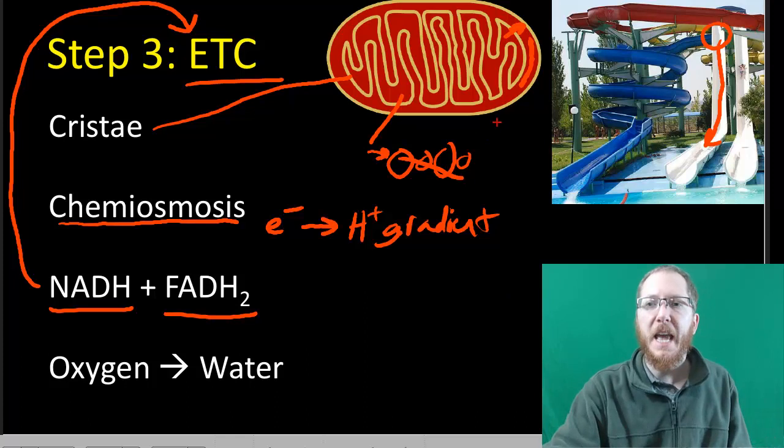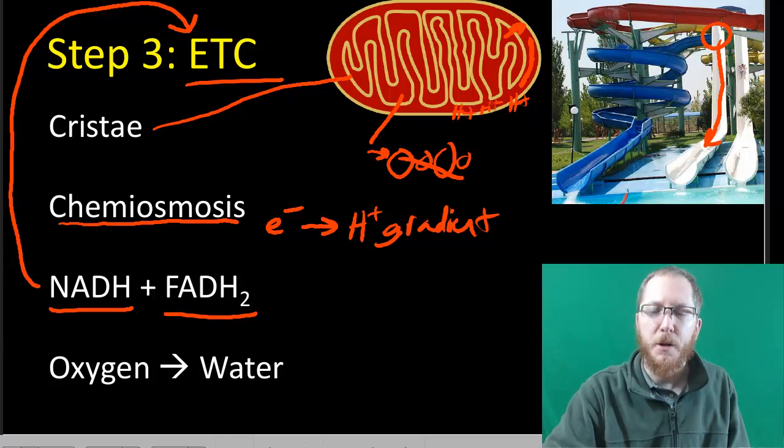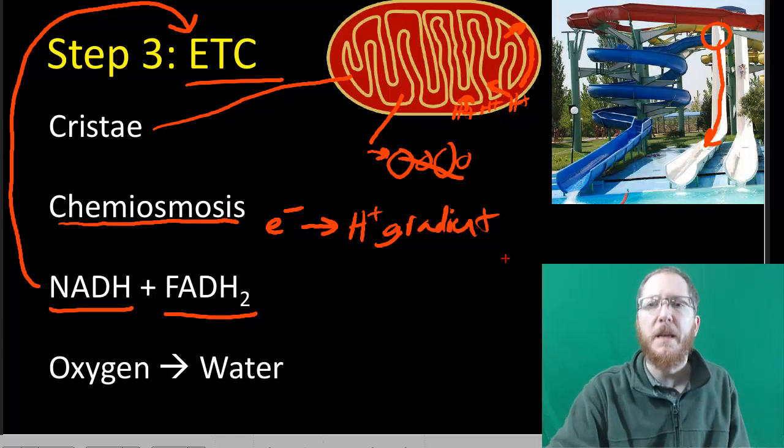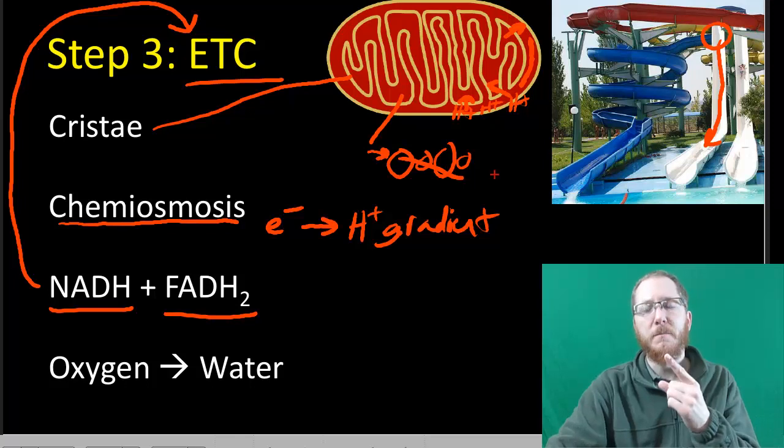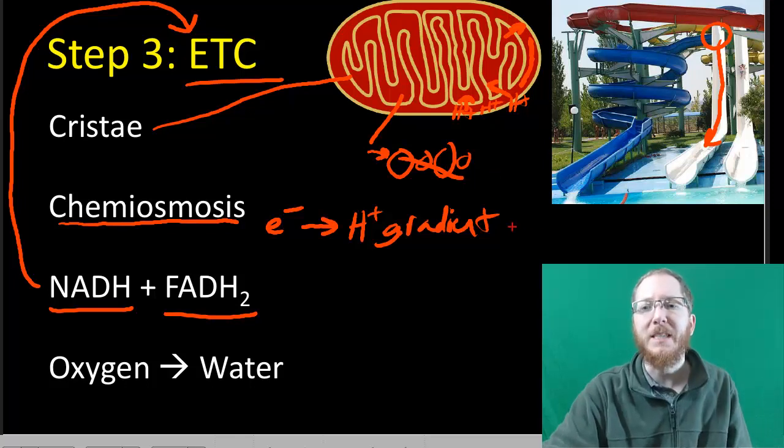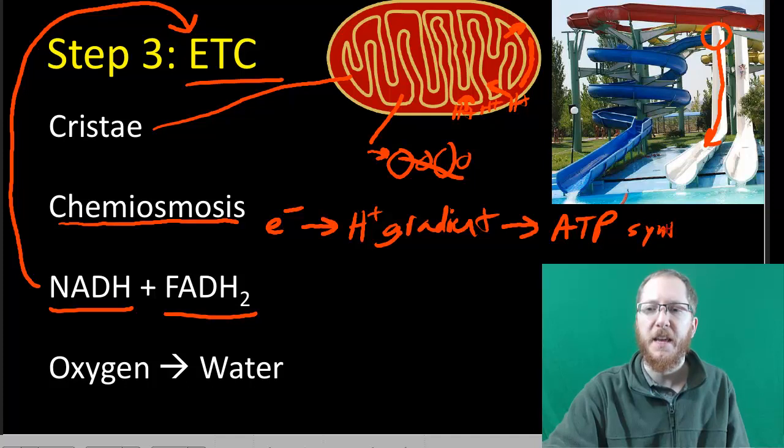Now we've got this H+ gradient. If we let the gradient try to go to equilibrium, the H+ which are currently in the middle want to go in. If we allow these guys to go into the matrix, that allows us to spin ATP synthase, that enzyme we talked about, and make ATP. The H+ gradient is what will power ATP creation, specifically by ATP synthase.